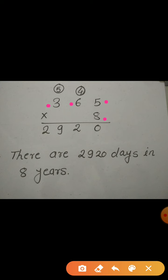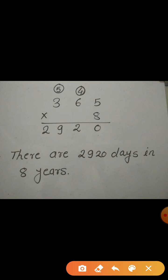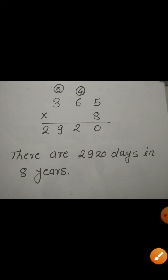Let's multiply starting from the ones place. First, 5 × 8 = 40; I write 0 and carry over 4. Then 6 × 8 = 48, and 48 + 4 = 52; I write 2 and carry over 5. Then 3 × 8 = 24, and 24 + 5 = 29. So the product is 2920. Therefore, there are 2920 days in 8 years.